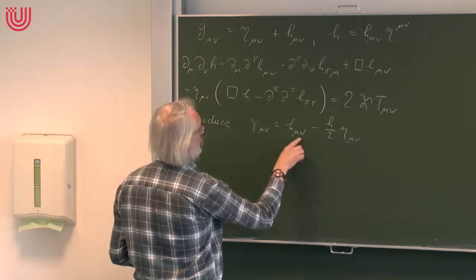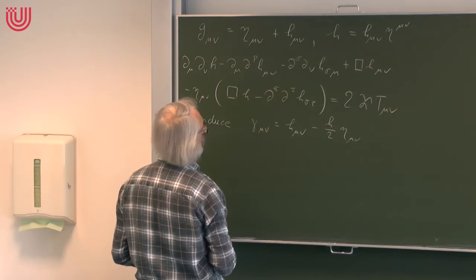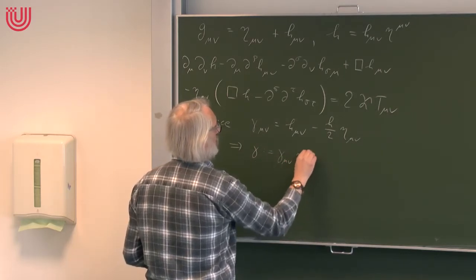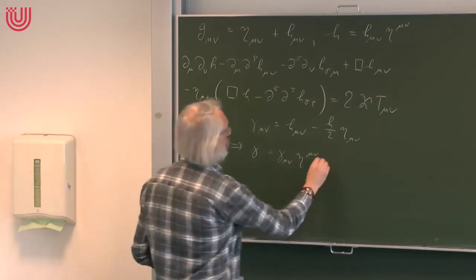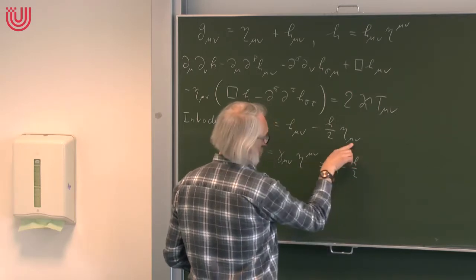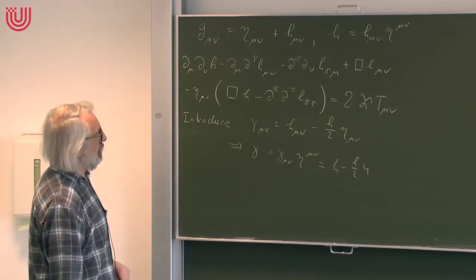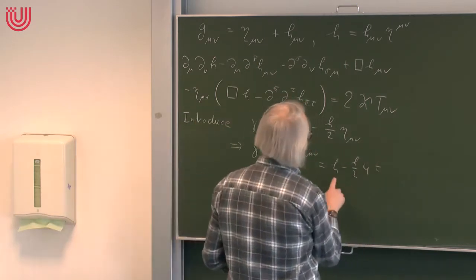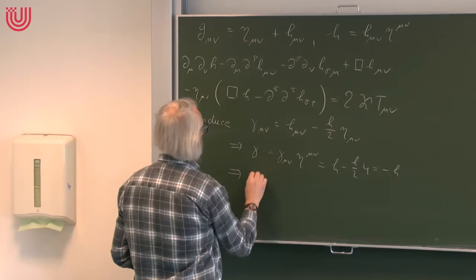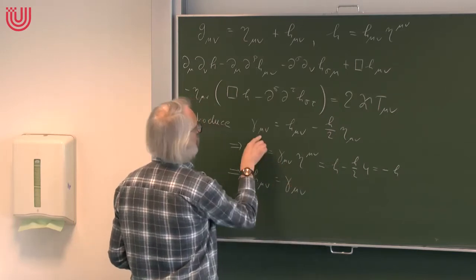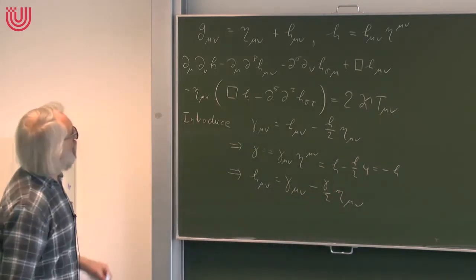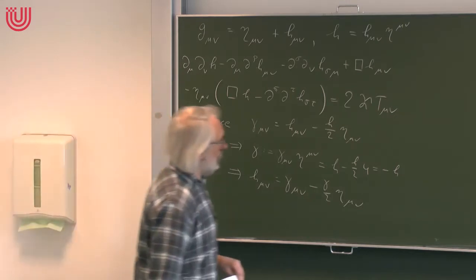To solve for h_μν, I must express the trace of h_μν in terms of the trace of γ_μν. If I take the trace — transvecting with η_μν — I get h minus h/2 times 4 (the trace of η in four dimensions is 4), giving minus h. So the trace of γ is minus the trace of h, and solving for h gives h_μν equals γ_μν plus (γ/2)η_μν, where we now use minus γ/2 η_μν.